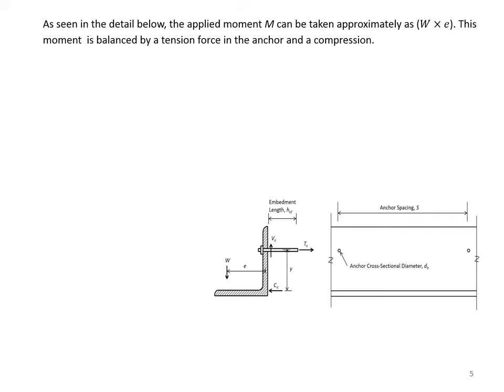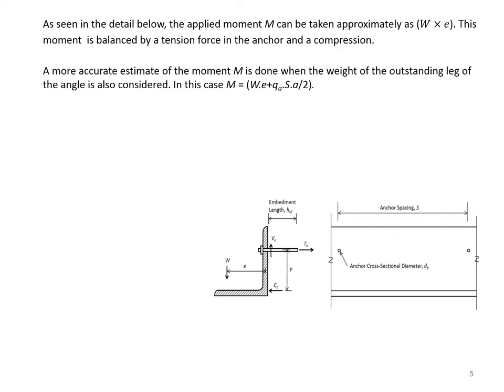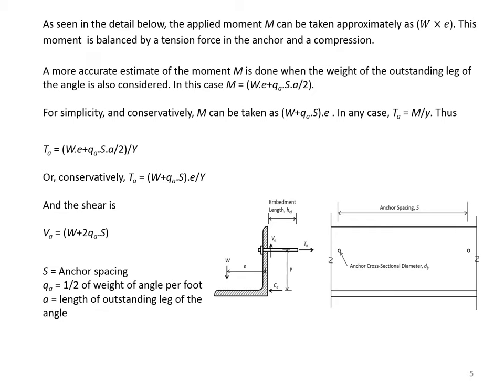The applied moment M can be taken approximately as W times E. This moment is balanced by a tension force in the anchor and a compression. A more accurate estimate of the moment M is done when the weight of the outstanding leg of the angle is also considered. In this case, M would be equal to W times E plus QA times SA over 2. QA is the weight of one half of the angle per unit length. S is the spacing between the anchors. A is the length of the outstanding leg of the angle. The tension force in the anchor is M divided by Y, where Y is the lever arm as shown in the figure.